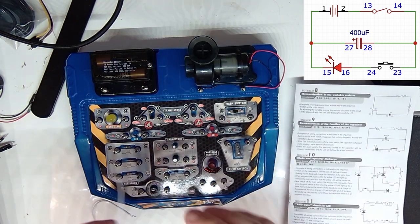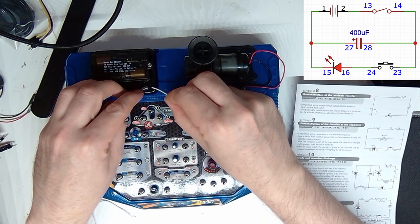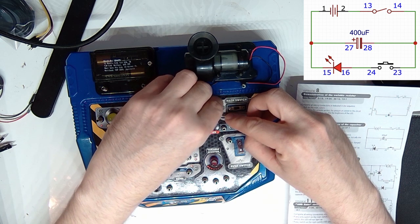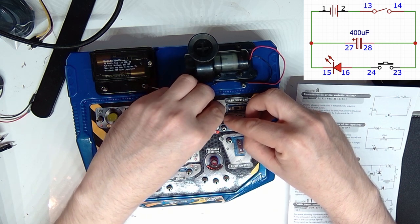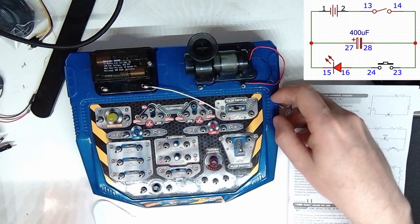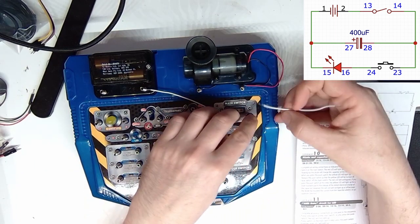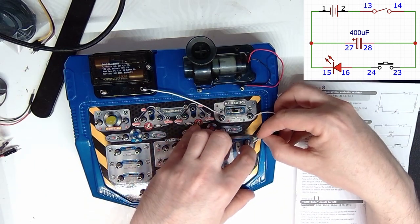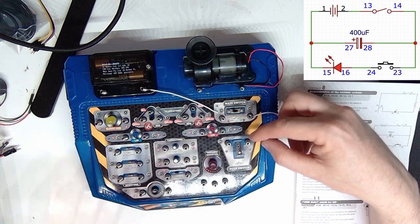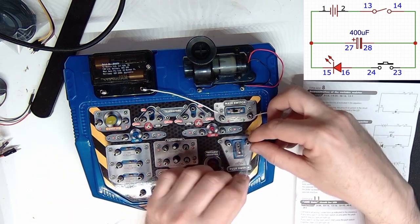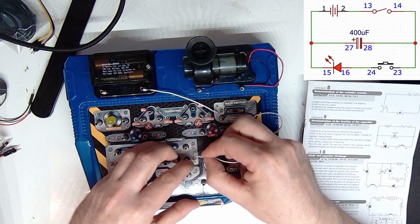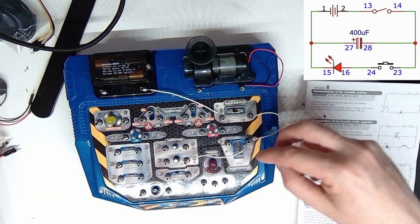Right, so we go from 2 to 13, 14 to 24 as 24 is closed, closer, then 24 to 28.